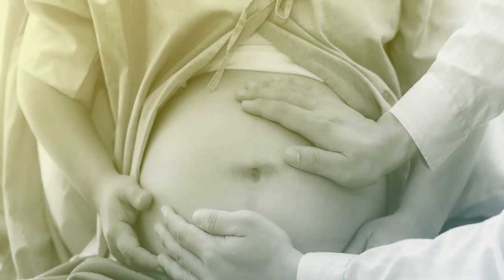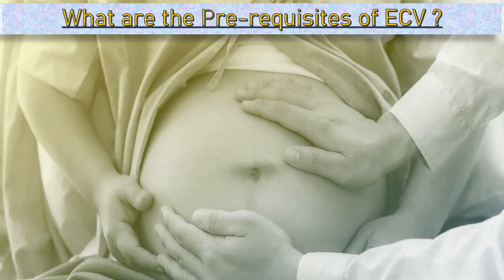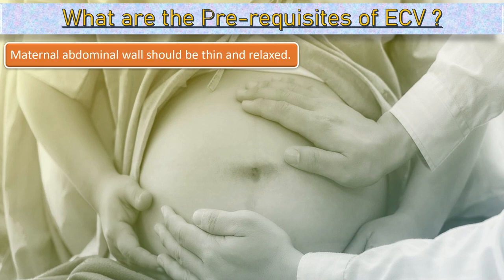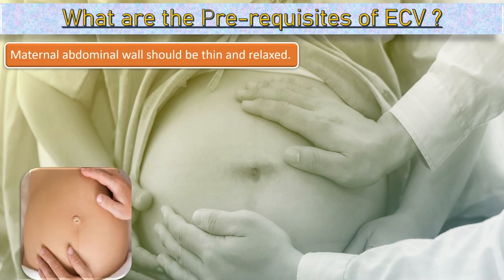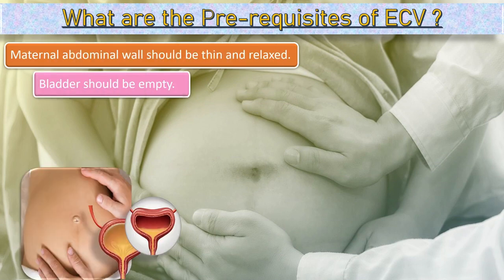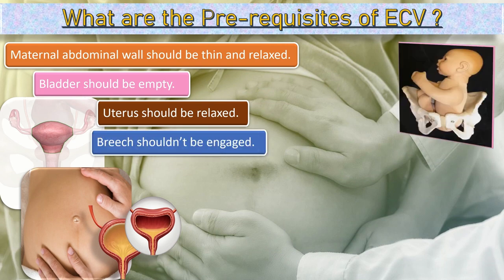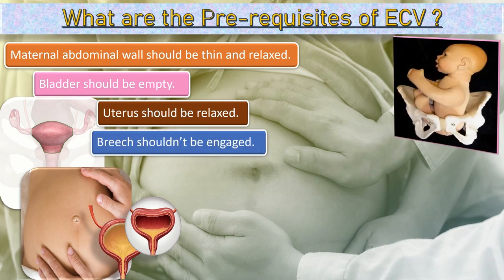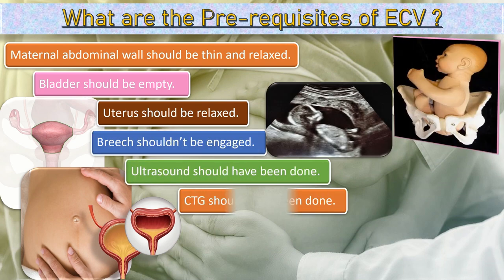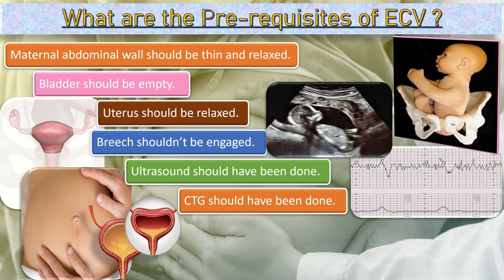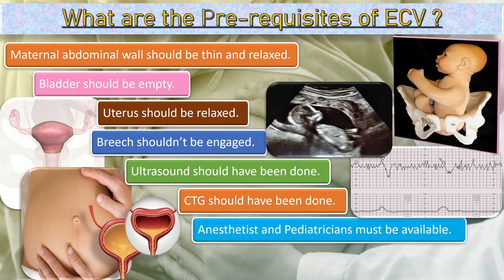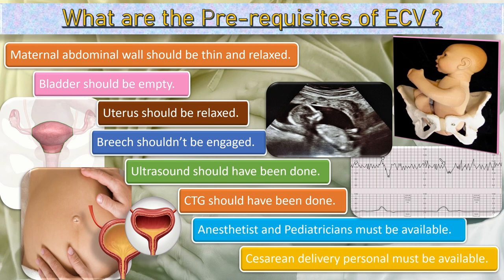What are the prerequisites of external kephalic version? The maternal abdominal wall should be thin and relaxed. Bladder should be empty. Uterus should be relaxed. Breech should not be engaged. Ultrasound should have been done. CTG should have been done. Anesthetist and pediatricians must be available. Cesarean delivery personnel must be available.